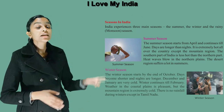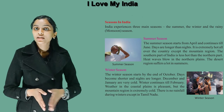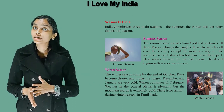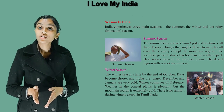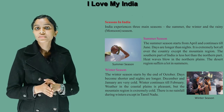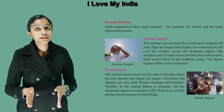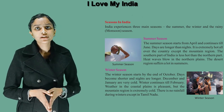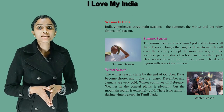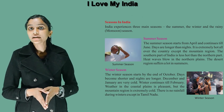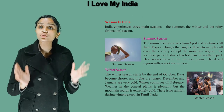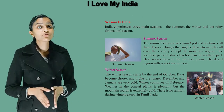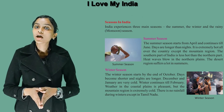The second one is the winter season. The winter season starts by the end of October. Days become shorter and nights are longer. December and January are very cold. Winter continues till February. Weather in the coastal plain is pleasant, but the mountain region is extremely cold. There is no rainfall during winter except in Tamil Nadu.